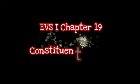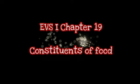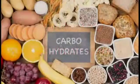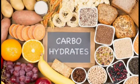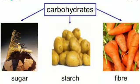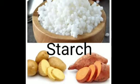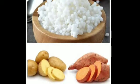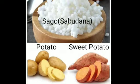EVS 1, Chapter 19: Constituents of Food — Carbohydrates. Carbohydrates are of three types: starch, sugars and fibre. Starch examples include potato, sago and sweet potato.